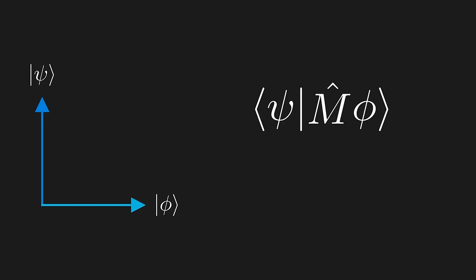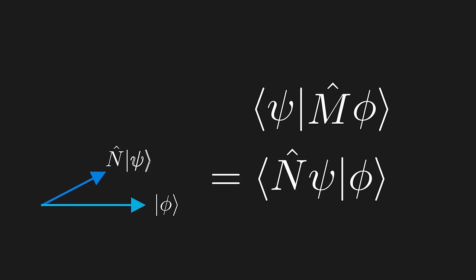Now, here's what we want to investigate. Do we have an operator N that we can apply to psi instead, and give an equal inner product? Geometrically, we're asking if we have an operator that allows us to instead move psi, and still give us the same magnitude times angle of the two vectors.